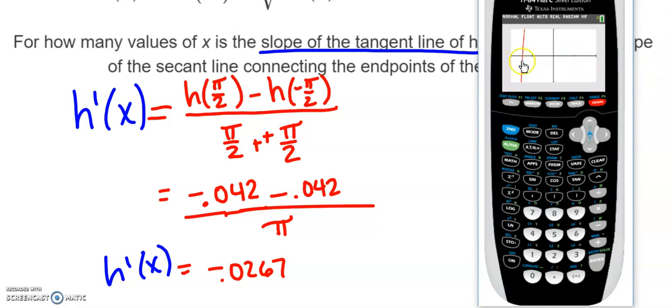Already you can kind of tell, right? If y equals -0.0267, we're going to cross once right here. And we will cross once over here when we get our symmetry coming in. All right, probably could have made my window even better.